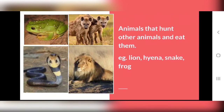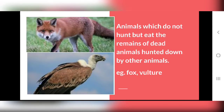These Carnivorous Animals are of two types. The first group includes animals like lion, hyena, snake and frog, which actively hunt for their food. The second group includes animals like fox and vulture. These animals do not hunt themselves but eat the remains of dead animals hunted down by other animals.